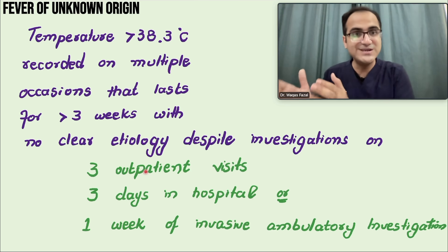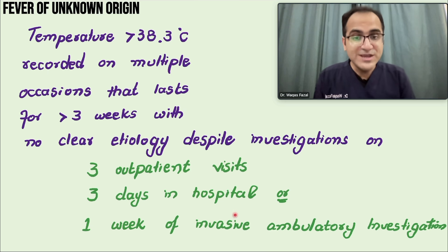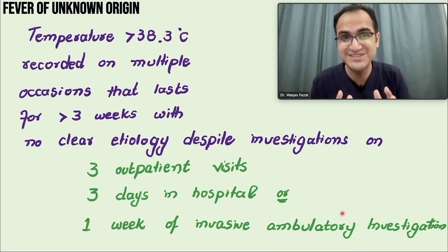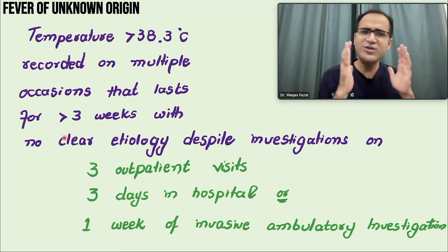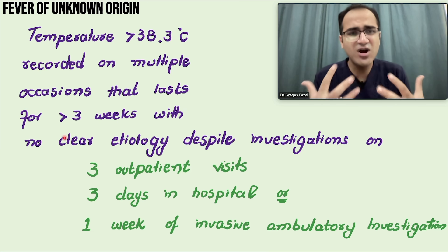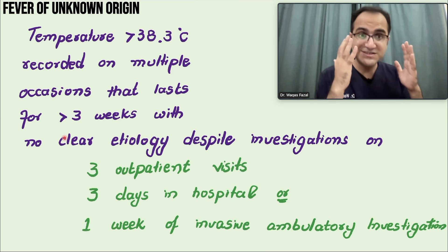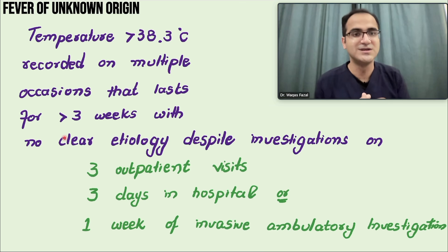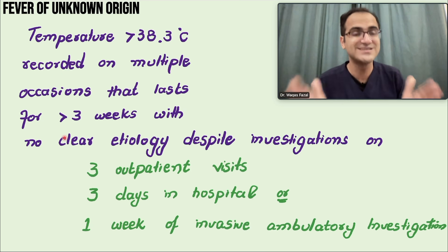This applies when the patient was running fever for three weeks, gets admitted, and on the third day of admission you still don't know the cause — or after one week of invasive ambulatory investigation you are still unable to find the cause. The patient is frustrated because they have been running fever for greater than three weeks and you still don't know the cause — that is fever of unknown origin.